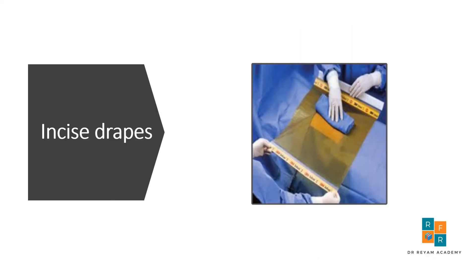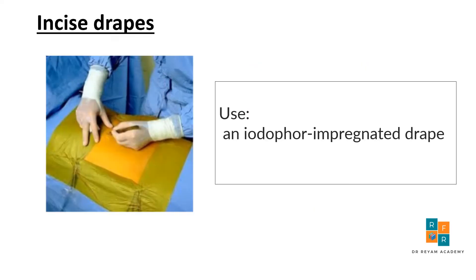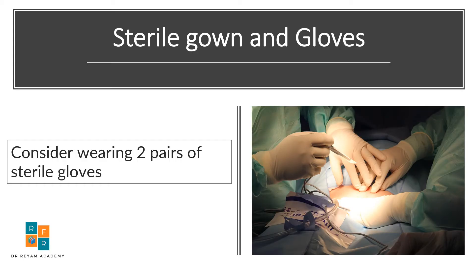Another important measure is incised drapes, and the type of incised drapes used is iodine-impregnated drapes. Regarding gloves, consider wearing two pairs of sterile gloves when there is a high risk of glove perforation.